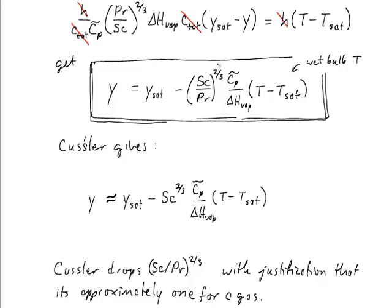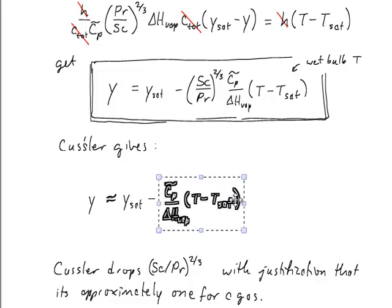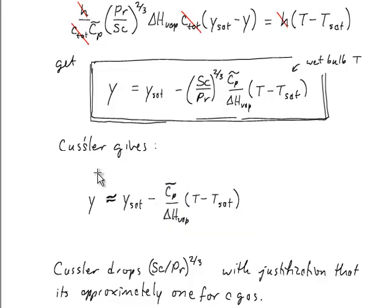So Kussler goes ahead and crosses off this Schmidt number and Prandtl number factor. Sorry. That shouldn't be there. I'm not sure why that was there. Kussler gives this expression that I've got written here now. So he gives this expression. This is an approximate expression, but it's a pretty good approximation because the Schmidt number and the Prandtl number in the gas phase are both approximately one and therefore their ratio should also be approximately one. And so he simplifies the expression to this.